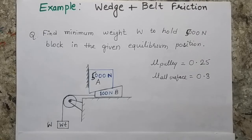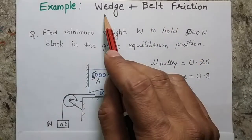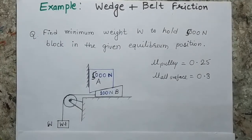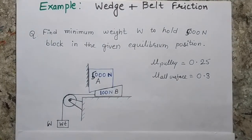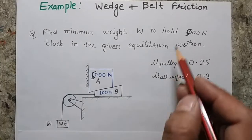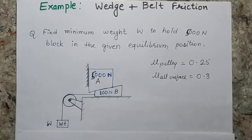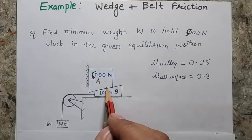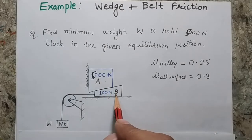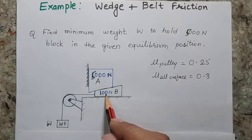This is an important problem combining both belt friction and wedge friction. The numerical problem asks: what would be the minimum value of weight so that we can hold the 5000 Newton block in its position? Here you can see there is a wedging action between block A and block B. Block A is 5000 Newton and block B is 100 Newton.